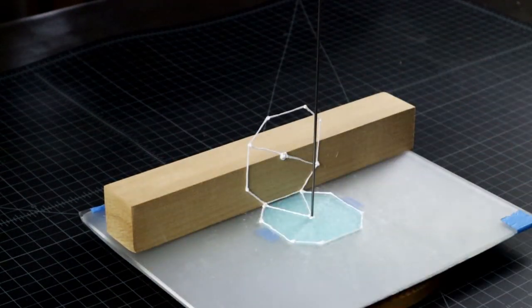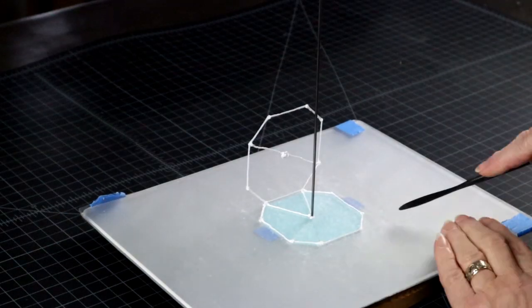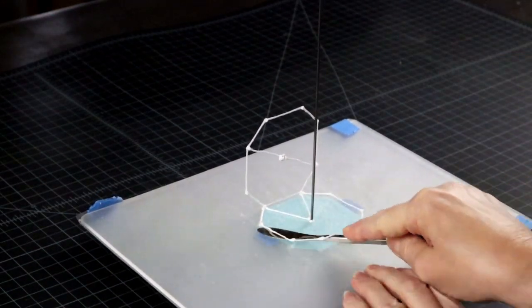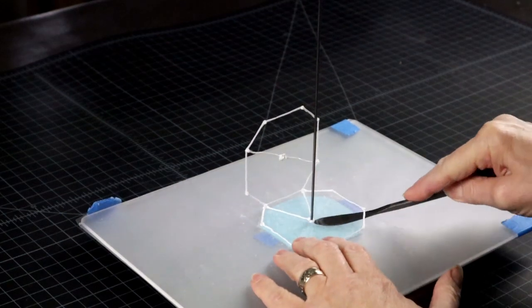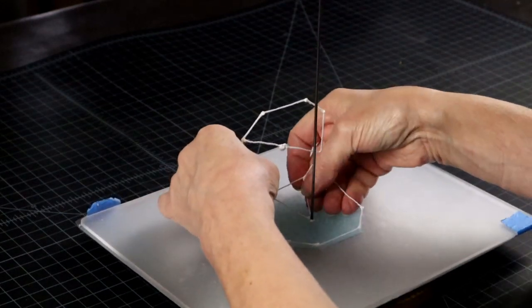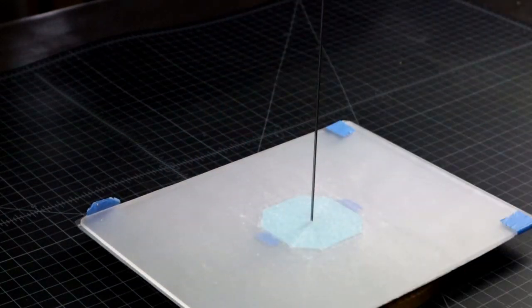From now on, you don't need the wooden block anymore. The shape is already 3D, so just continue around, aligning the structure to your pattern to complete one corner.